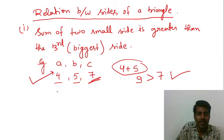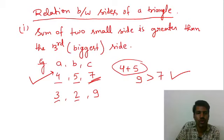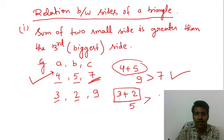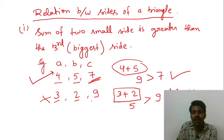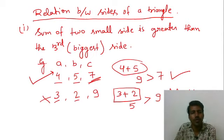Second, if I say, A is 3, B is 2 and C is 9. Two small sides, 3 and 2. 3 plus 2, sum is 5. Sum of two small sides is 5. It is greater than 9. True or false? It's false. It means we cannot make a triangle by this side. So, this cannot make a triangle. This is the relation among the sides of a triangle.